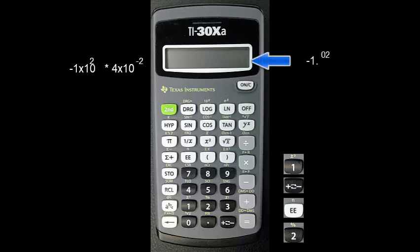The display reads negative 1 exponent 2, which means negative 1 times 10 to the 2.